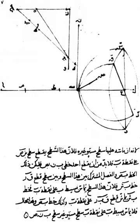Optics began with the development of lenses by the ancient Egyptians and Mesopotamians, followed by theories on light and vision developed by ancient Greek philosophers, and the development of geometrical optics in the Greco-Roman world. The word optics is derived from the Greek term meaning appearance or look. Optics was significantly reformed by developments in the medieval Islamic world, then advanced in early modern Europe where diffractive optics began. These earlier studies are now known as classical optics. The term modern optics refers to areas of optical research largely developed in the 20th century, such as wave optics and quantum optics.